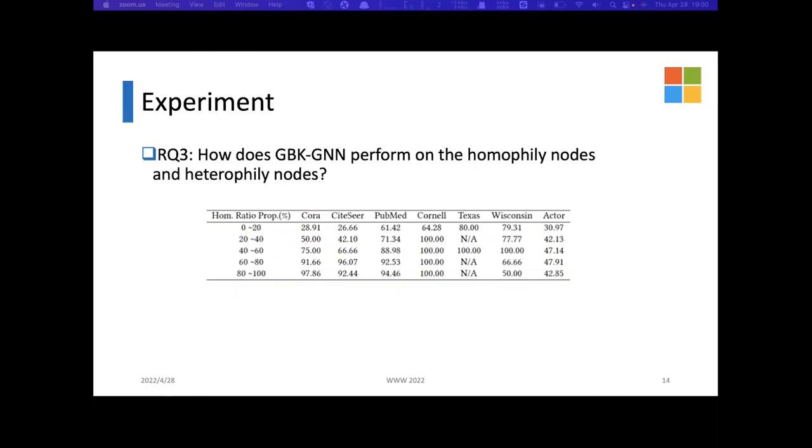The third research question is: how does GBK-GNN perform on homophilic nodes and heterophilic nodes? The table illustrates the test accuracy of GBK-GNN on nodes ranked by homophilic ratio on different datasets. We rank the nodes in the whole datasets by their homophilic ratio and split them into five separations. As shown in the table, both the nodes with low homophilic rate and high homophilic rate have good performance. We suppose our bi-kernel feature transformation contributes to this phenomenon. If a node has a high homophilic rate, WS will contribute more to the performance. Otherwise, WD will have more contribution.